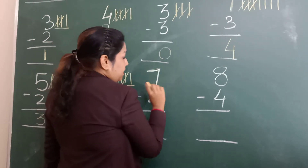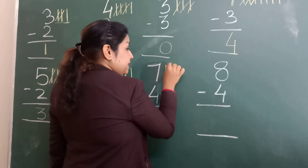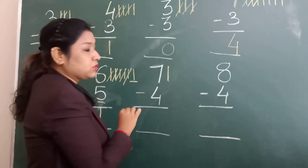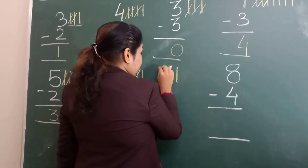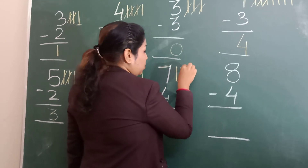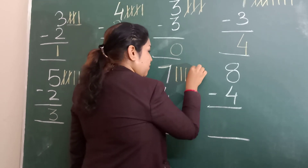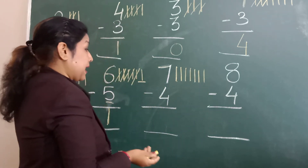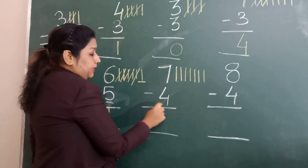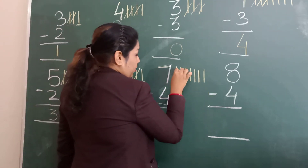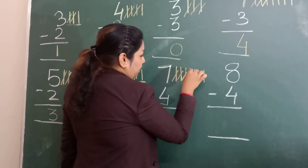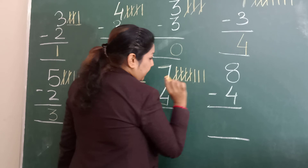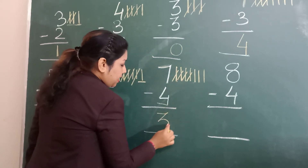Here we have the number 7. So we will draw 7 lines — you have to count the lines also: 1, 2, 3, 4, 5, 6, 7. And how many lines you will cut? 4. And how many lines remain? 1, 2, 3. So 3 is your answer.